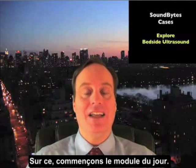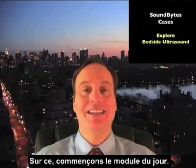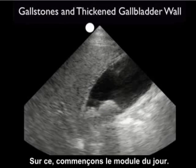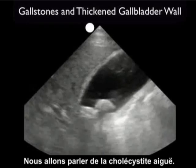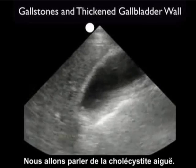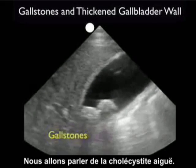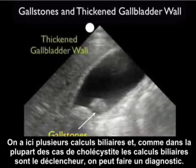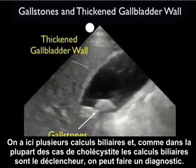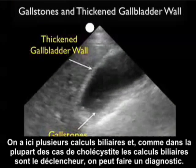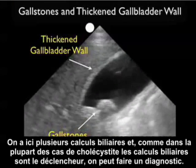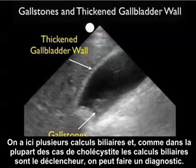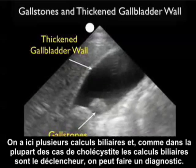So without further delay, let's get right into today's module. Let's move on to a discussion of acute cholecystitis. Here we see a number of gallstones, and as most cases of cholecystitis in the ED are calculous or gallstone-related, this would be a signature finding.